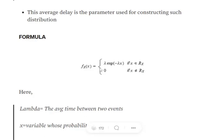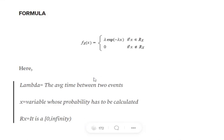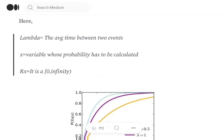The formula for exponential distribution is lambda times e raised to the power of minus lambda x, where x is the event variable and lambda is the average delay. This gives us the probability of x occurring using the average delay between two events.